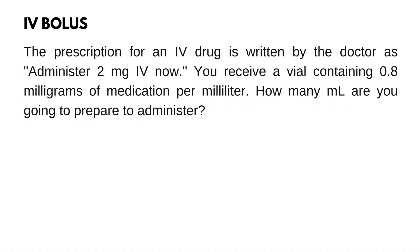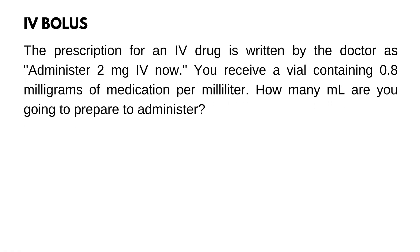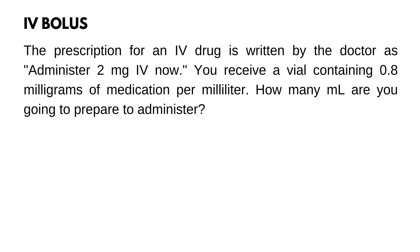A prescription for an IV drug is written by the doctor as: administer 2 mg IV now. You receive a vial containing 0.8 mg of medication per milliliter. How many milliliters are you going to prepare to administer?